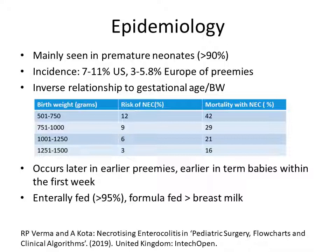Talking about epidemiology: NEC is mainly seen in premature neonates — over 90% of cases are in premature neonates. The incidence varies by country; in the US it is about 7–11% and 3–5% in Europe. The exact incidence in India is not known. There is an inverse relationship of NEC to gestational age and birth weight — the more premature and lower birth weight the baby, the higher the risk and mortality from NEC.